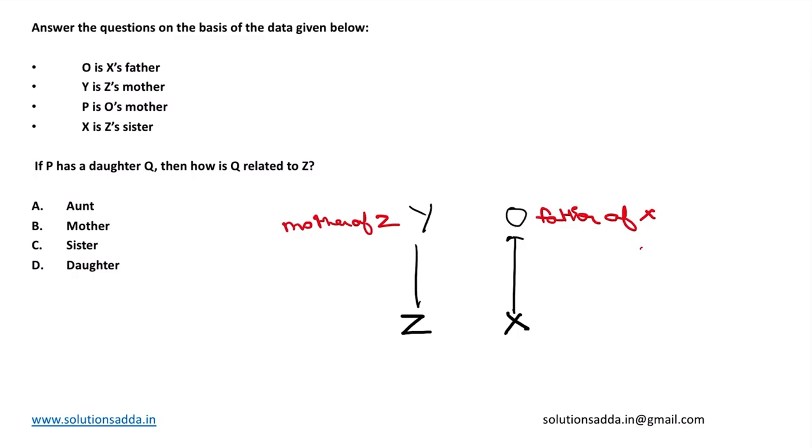Now P is O's mother. O's mother is P, therefore she will be grandmother of X.